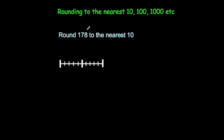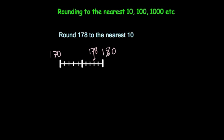Next: round 178 to the nearest 10. So if this was 170 at this end and 180 at this end, 178 would be here. So to the nearest 10, as you can see, 178 is very close to 180. So therefore 180 is going to be the answer. If you were asked to round 178 to the nearest 10, the answer would be 180.